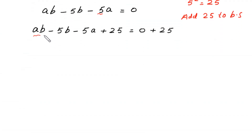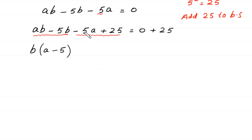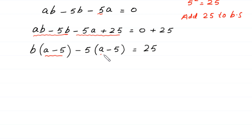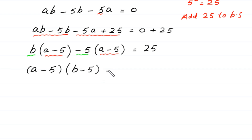From the terms ab minus 5b, we factor out b, giving b times (a minus 5). From the terms negative 5a plus 25, we factor out negative 5, giving negative 5 times (a minus 5). Since (a minus 5) is a common factor, we factor it out, getting (a minus 5)(b minus 5) equals 25.